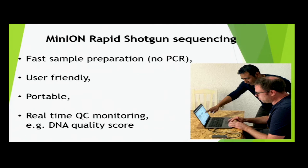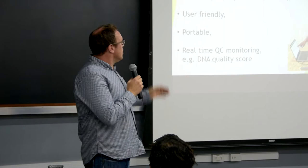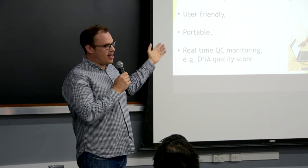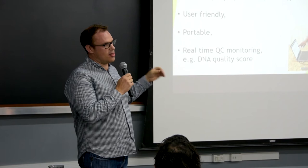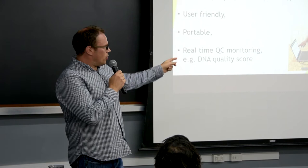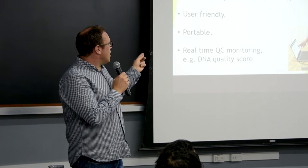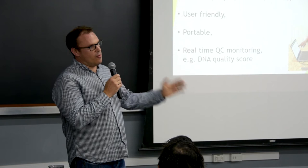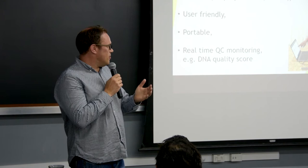That is a MinION, which Hector now has at Contora Zoo. We're applying it to SafeWater - we want it to be fast, easy to use, and accurate. It's user-friendly, a bit like drop-down menus. It's portable - about the size of a small mobile phone or a stapler. You get real-time quality control monitoring, meaning you know if it's working within three minutes of starting the reaction. You can stop it early if it looks bad and not waste time, energy, or consumables.